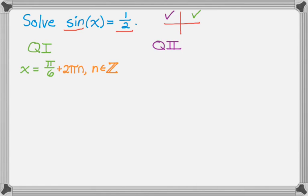In quadrant 2, the angle that has a sine of 1/2 is 5 pi over 6, plus 2 pi n, because it could be any coterminal angle to that.